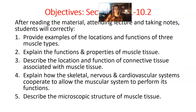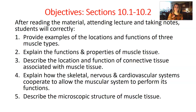Here are our objectives. Number one, provide examples of the locations and functions of the three muscle types. Number two, explain the functions and properties of muscle tissue. Number three, describe the location and function of connective tissue associated with muscle tissue. Number four, explain how the skeletal, nervous, and cardiovascular systems cooperate to allow the muscular system to perform its functions. And finally, describe the microscopic structure of muscle tissue.